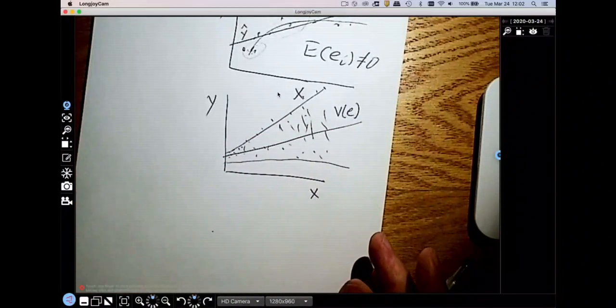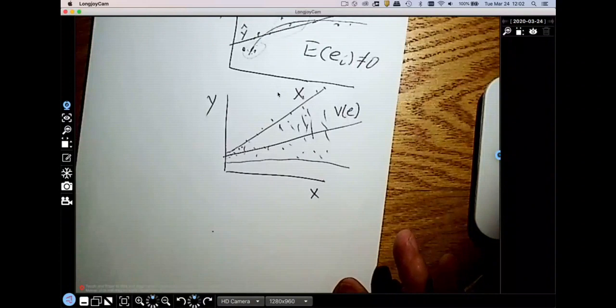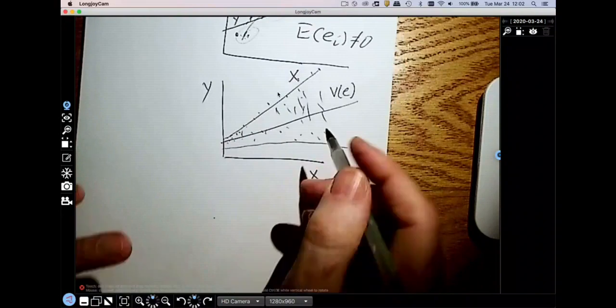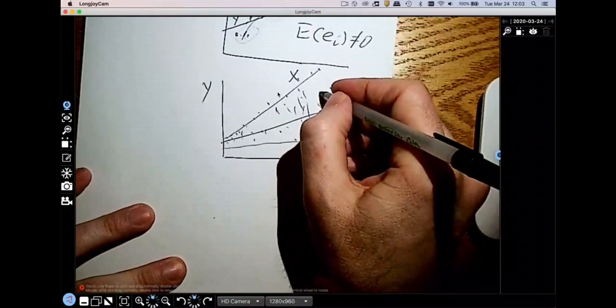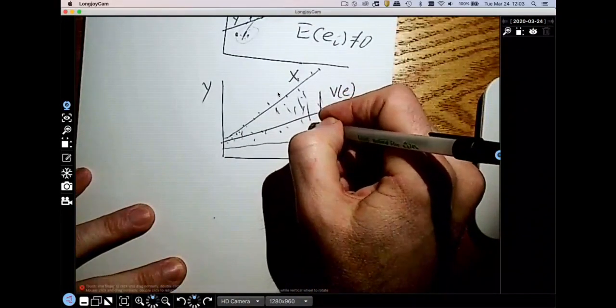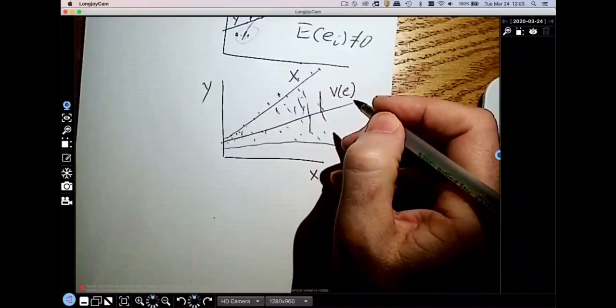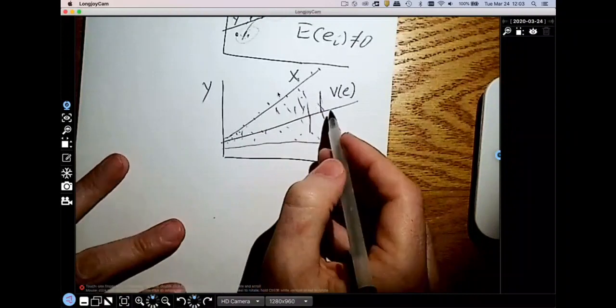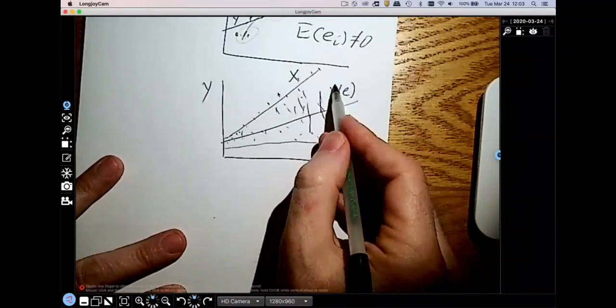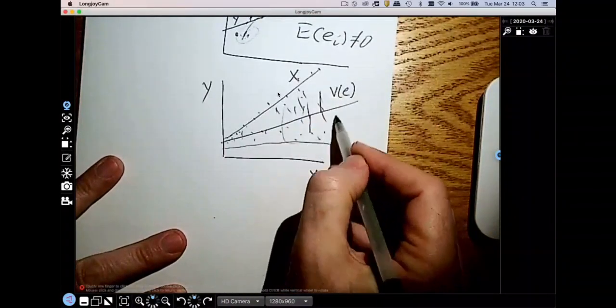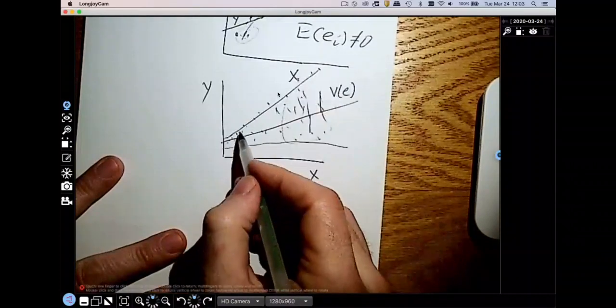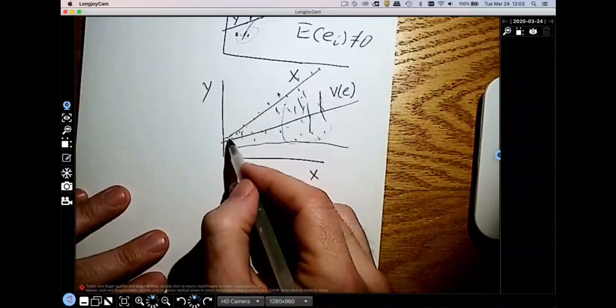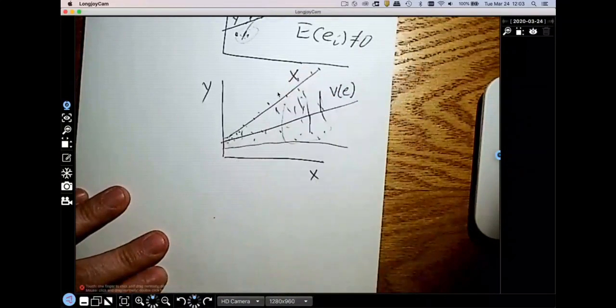So the problem this creates is that with ordinary least squares, we give every error, every estimated residual the same amount of weight. Now, if we do that when you've got heteroscedasticity, you end up giving a whole lot of weight to the errors in this region, and you don't give much weight at all to the errors down here. So it's like these points don't count as much as these points.